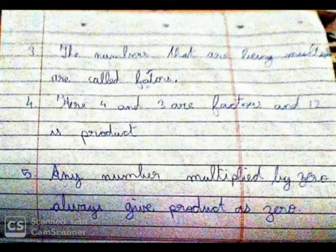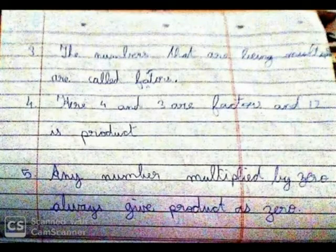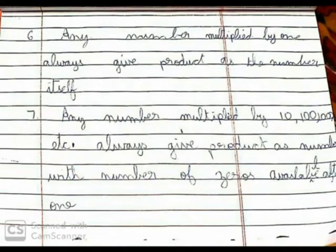4 and 3 are factors and 12 is the product. Any number multiplied by 0 always gives a product of 0. Any number multiplied by 1 always gives the number itself. Any number multiplied by 10, 100, 1000, etc., always gives the product as the number followed by the corresponding number of zeros.